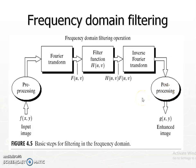The preprocessing and post-processing are mostly not related to the frequency domain filtering itself. What we are interested in is: take the Fourier transform, multiply it with the corresponding filter transfer function, then take the inverse transform. Why are we multiplying? Because convolution in the spatial domain is filtering, and when we move to the frequency domain, that convolution becomes multiplication.